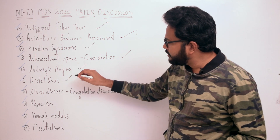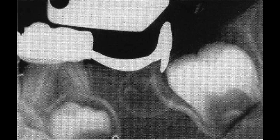Next case-based question pertains to the distal shoe appliance. As given in McDonald's, mesial movement and migration of the first permanent molar often occurs before eruption in instances of premature loss of the second primary molar. Roch advocated a crown and band appliance with distal intragingival extension, which may be used to maintain space or influence the active eruption of the first permanent molar in a distal direction. In this case, the keywords were a five-year-old child, meaning the first permanent molar is still not erupted.